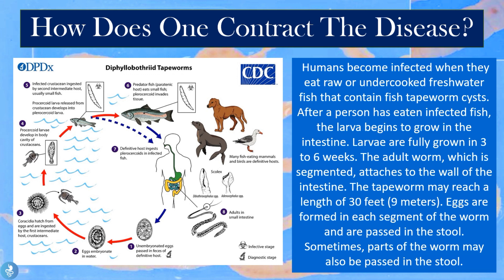Sometimes parts of the worm may also be passed in the stool. Looking at the life cycle diagram, the unembryonated eggs are passed into the feces of the definitive host. These eggs then embryonate in the water, and the coracidia hatch from the eggs and are ingested by the first intermediate host, which are crustaceans — a diverse arthropod family that includes crabs, lobsters, crayfish, shrimps, and prawns.